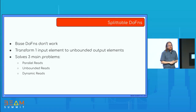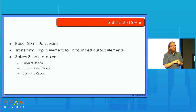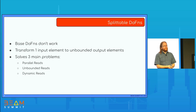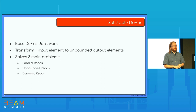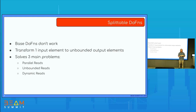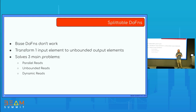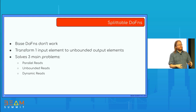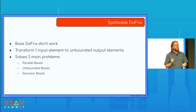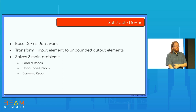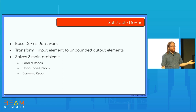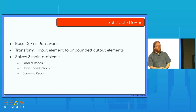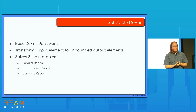Splittable DoFns are the core piece of technology we use to make reads work. The baseline DoFn can't be used in an infinite context — in a DoFn, you take one input element and can output many elements, but you can't output an unbounded number, which is what we need to support streaming sources. That process is a function call that eventually needs to return, and if it were to never return, the processing would fail the instant anything goes wrong with the machine. Splittable DoFns have the feature of actually being able to output an unbounded number of elements from a single input element.